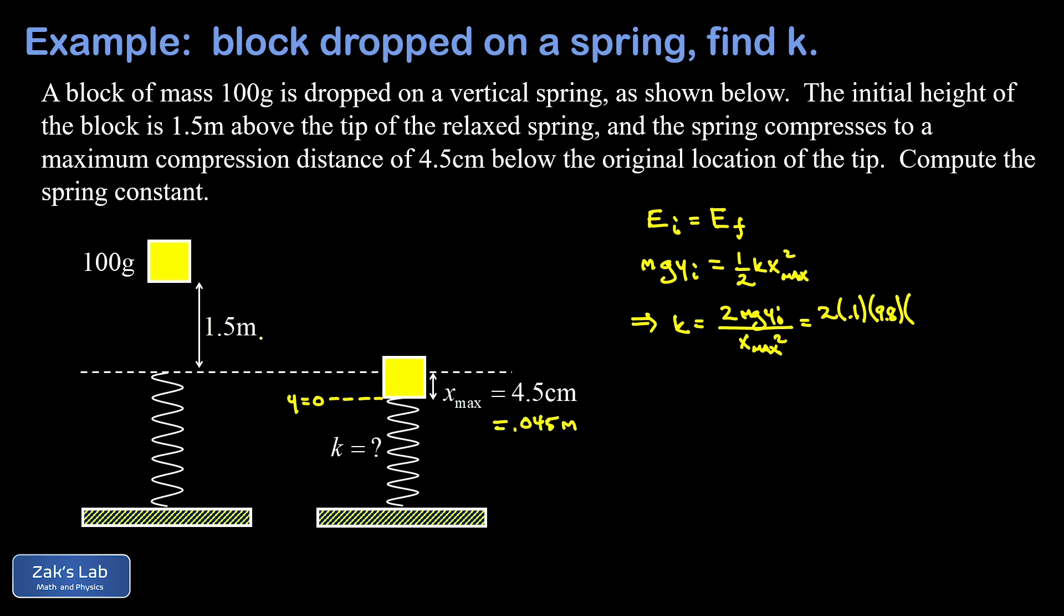I've got to add that to the one and a half to get the initial height with respect to my origin. So that's going to be 1.545 meters. Then I have to divide by the maximum compression squared. Again, this has to be in SI units. So 0.045 meters squared.